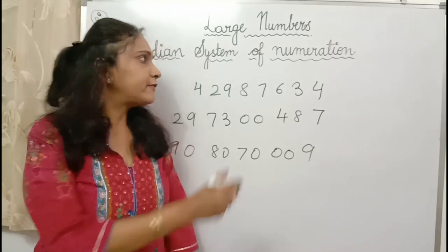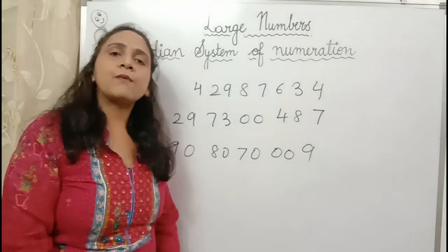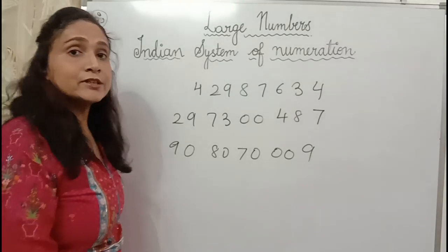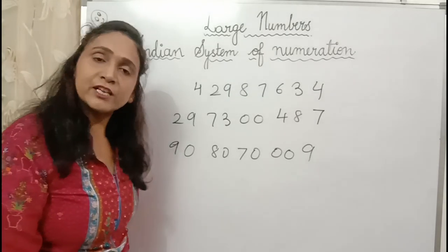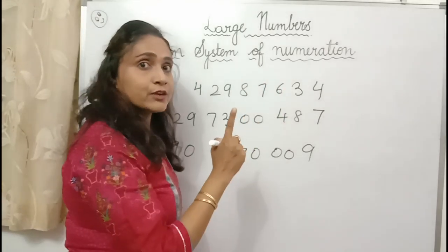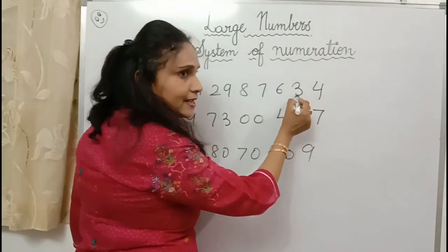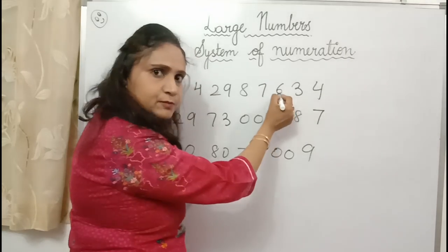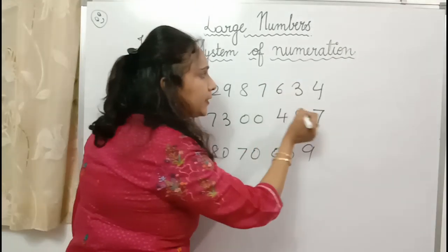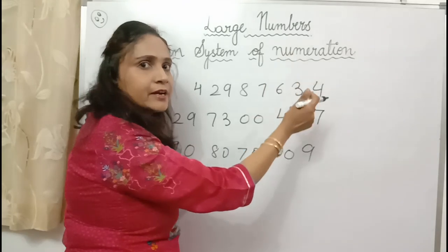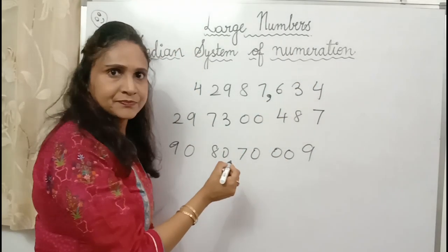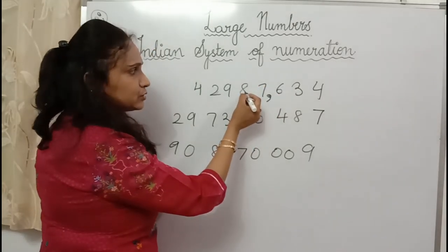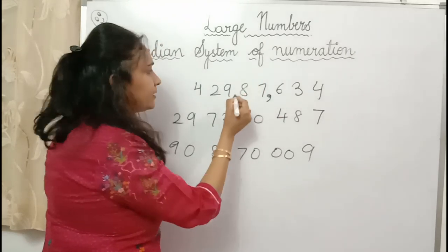The major step before reading a number is marking of periods — putting these commas. Let's see how to mark periods. You should remember the place values: ones, tens, hundreds — one period of ones is done, mark the period with a comma. Then thousand, ten thousand — thousand period is done, mark the period. Then lakh, ten lakh — lakh period is done, mark the period. And then crore.